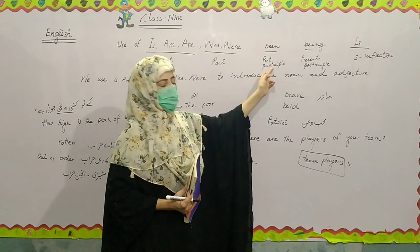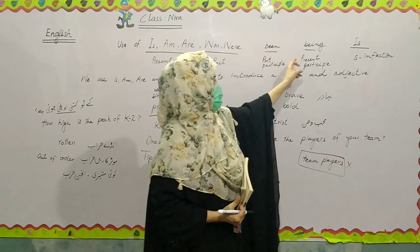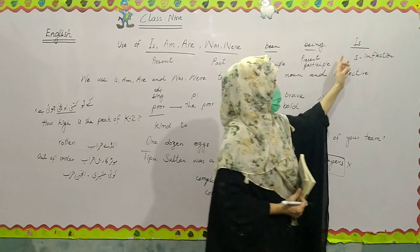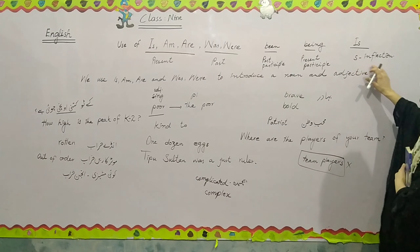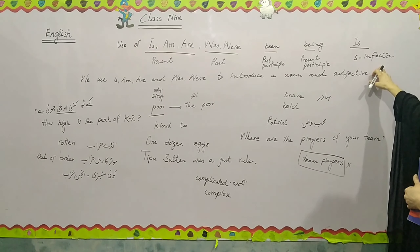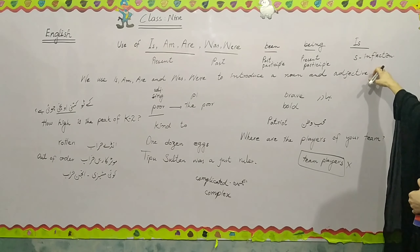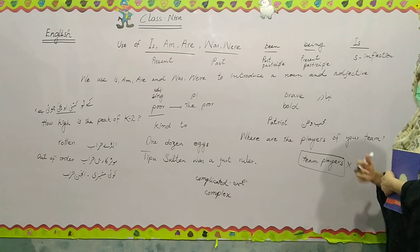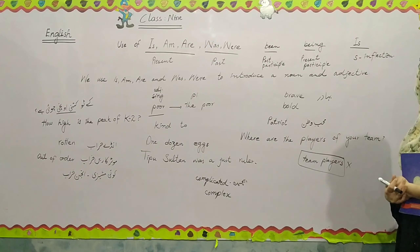Being is their third form or past participle, and being is present participle. As I told you earlier, 'is' is an inflection. The S inflection is used in the third person singular in present indefinite — like 'he is a boy' — it makes the present indefinite tense.